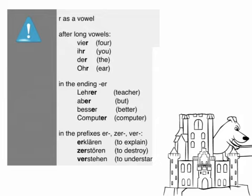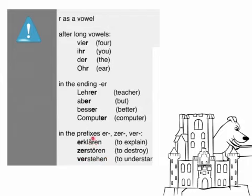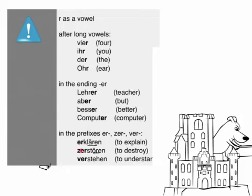The same goes with prefixes Er-, Zer-, Ver-, because you have the feeling that part of the word ends after the prefix, and this is why you don't pronounce the R. Examples: Erklären, Zerstören, Verstehen. You can also drop the R in the verb ending -EN: Erklären, Zerstören, Verstehen. This is the important part — you don't need to pronounce the R before the -EN ending in verbs.